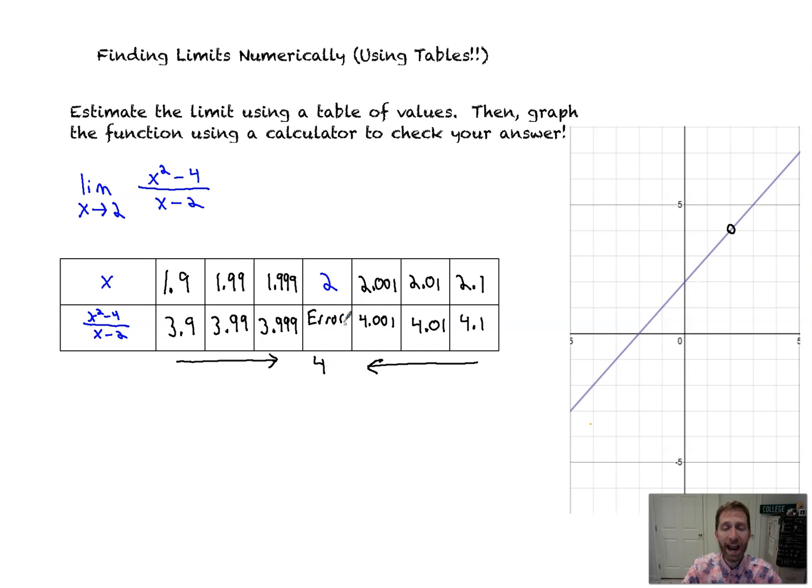So while there's an error in your calculator, what that actually means graphically is there's a hole there at x equals 2. But as we approach from the left-hand side and from the right-hand side, as we saw numerically, we are approaching a y value of 4. It's as simple as that. I love the table problems. They're classic, simple ways of seeing numerically how we approach an x value from both sides and then approach a y value, the same y value, making the limit exist to whatever that number is.